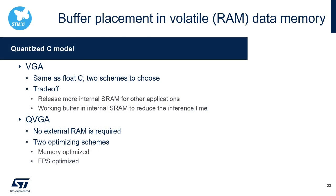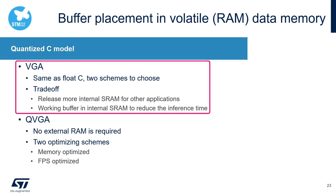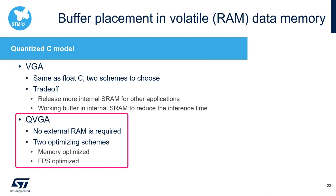What about the implementation of the quantized C model? If the VGA camera resolution is selected, it's the same as the float C model. But choosing one scheme or the other comes down to the following trade-off: one, release as much internal SRAM as possible so that it's available for other user applications that require a significant amount of internal SRAM; and two, reduce the inference time by having the working buffer allocated in faster memory, such as the internal SRAM. If the QVGA camera resolution is selected, the implementation fits completely into the internal SRAM, and no external RAM is required. For this configuration, we have two optimizing schemes: one is to optimize the memory, and the other one is to optimize the performance.